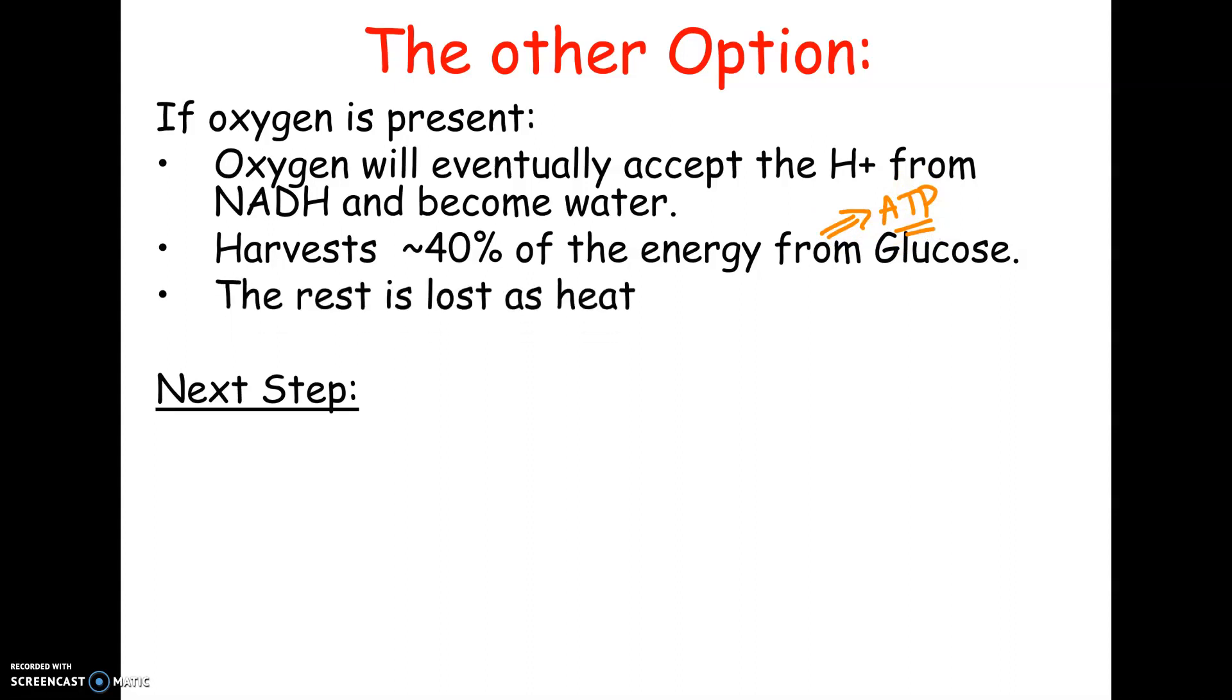The rest of it is actually lost as heat. So I gave the analogy in class of glucose being sort of like a $10 bill, and you're breaking it into ones to run a bunch of reactions in your cell that require singles. Technically, you're taking your $10 bill, but you're only getting about $4 out of it, and the rest of it is lost as heat.